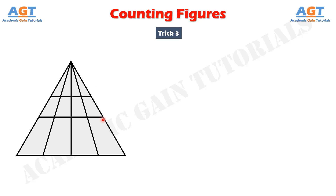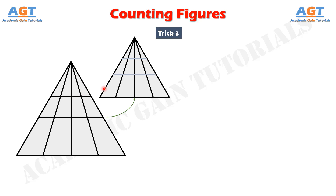How many triangles are there in this figure? First, think of just the non-horizontal lines and forget the horizontal ones. Using trick number 2, we serially number the internal triangles: 1, 2, 3, and 4. Taking the last digit 4, the immediate next number is 5. Multiplying 4 and 5 gives 20, divide by 2, so we get 10. Total number of triangles due to these lines is 10.